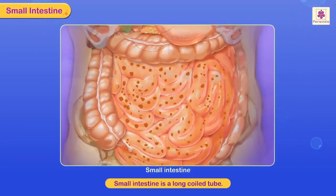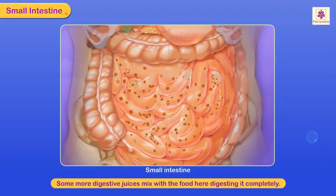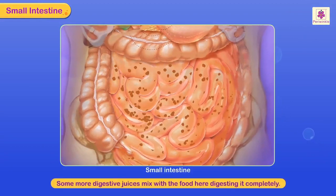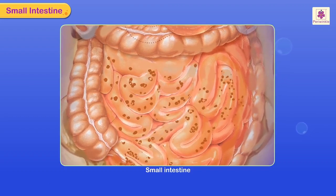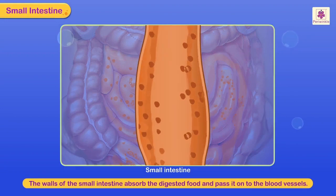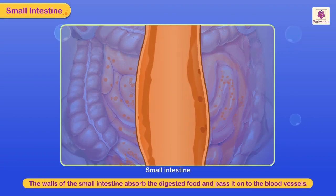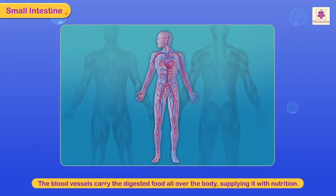The small intestine is a long coiled tube. Some more digestive juices mix with the food here, digesting it completely. The walls of the small intestine absorb the digested food and pass it on to the blood vessels, which carry the digested food all over the body, supplying it with nutrition.